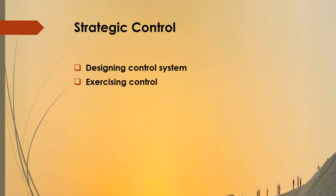Strategic control may be considered the last stage of the strategic management process. It is an ongoing process and should be taken as a guide for future course of action. For effective implementation and achievement of organizational objectives, it is necessary that there is continuous monitoring of strategy implementation so that suitable actions may be taken whenever something goes wrong. Strategic control is discussed in detail in another video.